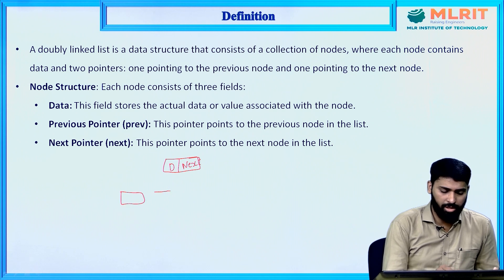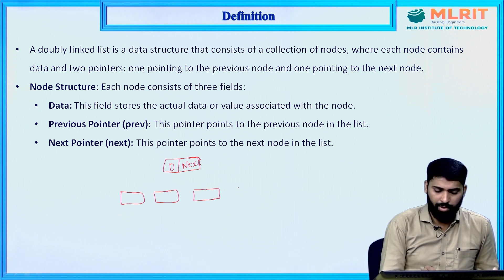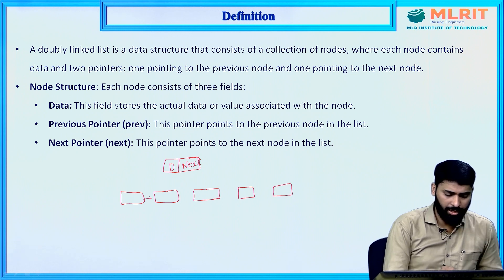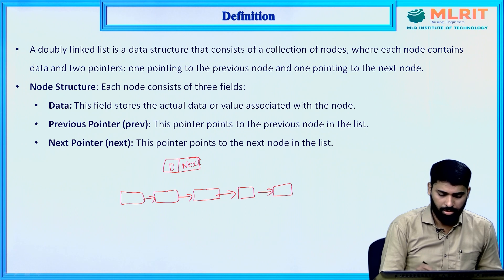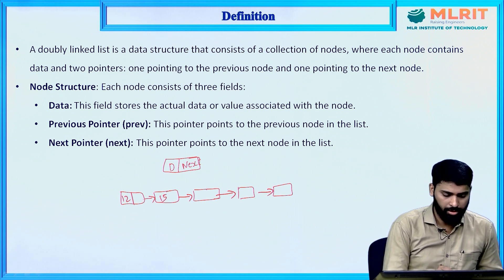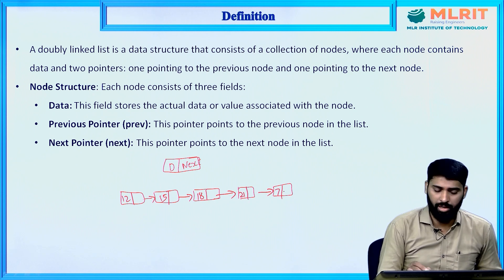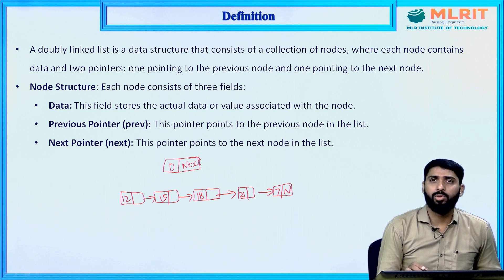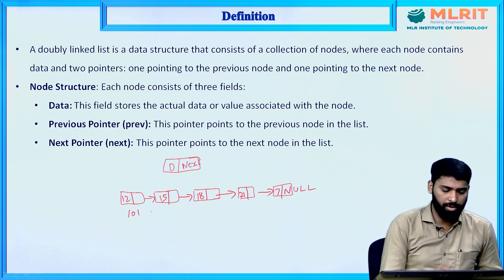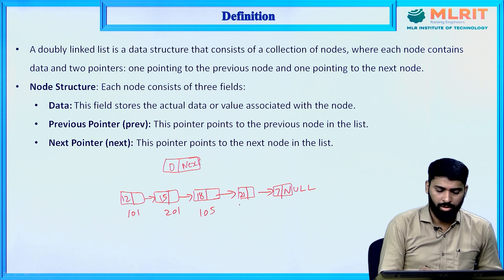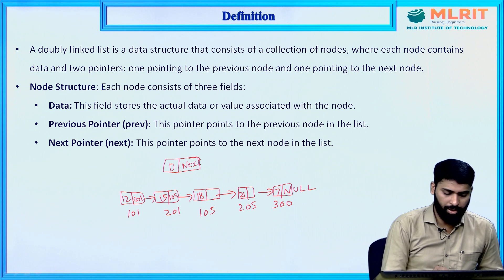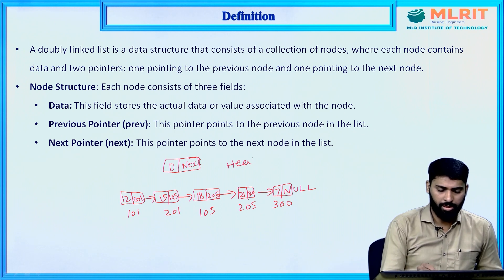Let us assume this is a single linked list with five nodes connected together. The data parts are 12, 15, 18, 21, and 7. The last node's next part will be null, which is how we identify the end of the list. The node addresses are 101, 201, 105, 205, and 300, and the next part stores 201, 105, 205, 300. Head equals 101.